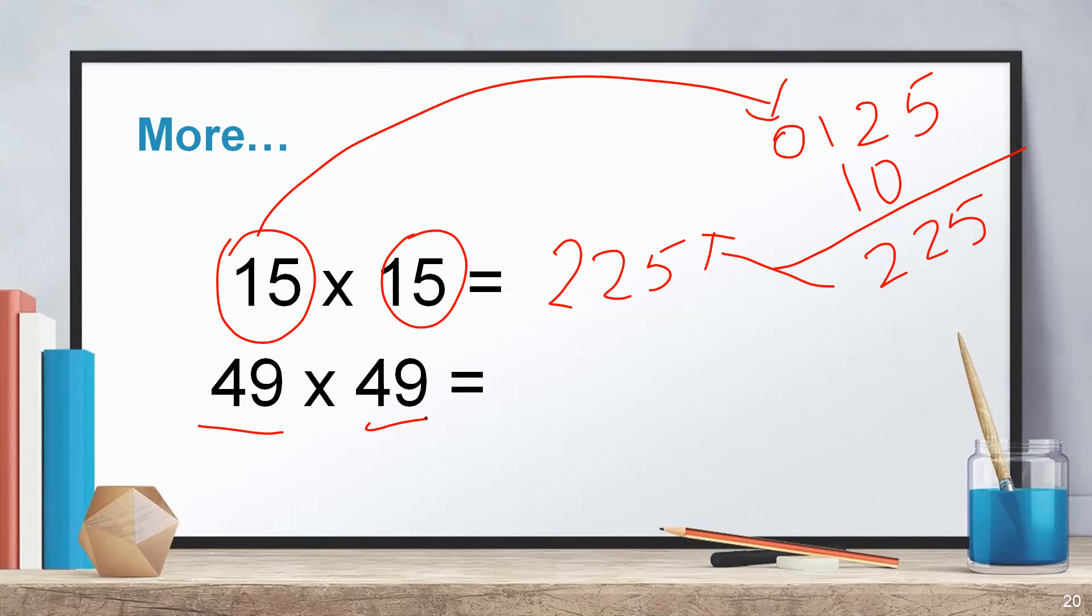Let's apply 49 into 49. 4 times 4 is 16. Square of 9 is 81. 4 times 9 is 36. 36 times 2 is 72. Your answer is going to be 1, 8 plus 2 is 10. That makes it 7 plus 7, 14. That makes it 2. So your answer for 49 times 49 is 2,401.